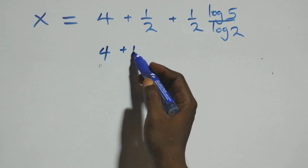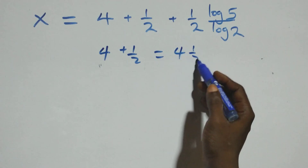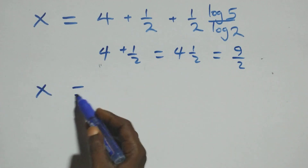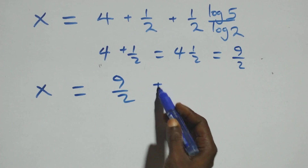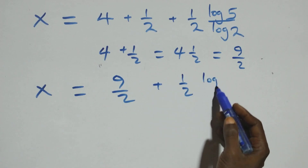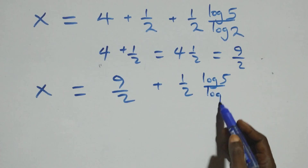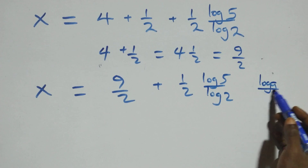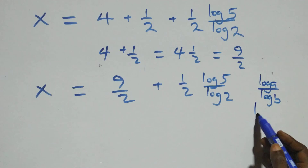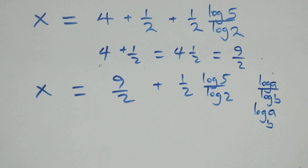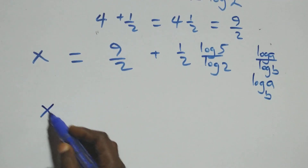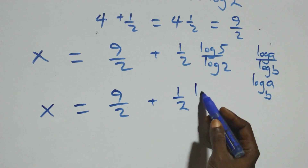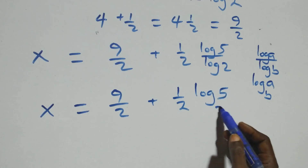log 4 plus 1 over 2, which is the same as 4 plus 1 over 2, giving 9 over 2. Then what we have becomes x equals 9 over 2 plus 1 over 2 times log 5 over log 2. Here we apply the change of base rule: when we have log a over log b, this is the same thing as log a to base b. So we have x equals 9 over 2 plus one half log 5 base 2.